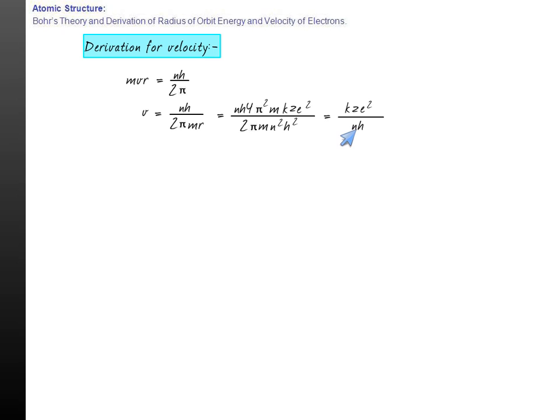I am just putting the value of r, which simplifies to kze² by nh. So we can clearly see n and z are the variables that I have, and the other values are constant. Therefore, v comes out to be equal to the constant, which comes out to be 2.18 × 10⁶ meter per second × z by n. I have to just remember the value along with z by n or n by z. So velocity is equal to z by n.